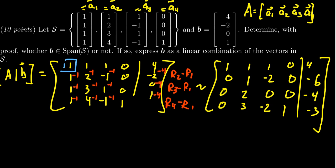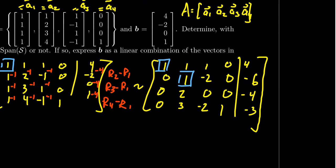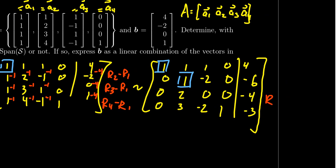That takes care of the first column. So for the next column, focusing on the next pivot right here, we have a 1 there, that's great. We got to get rid of the 2 and the 3 that are below it. So we're going to take row 3 minus 2 times row 2, and we're going to take row 4 and subtract from it 3 times row 2.